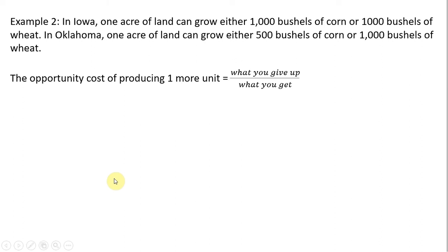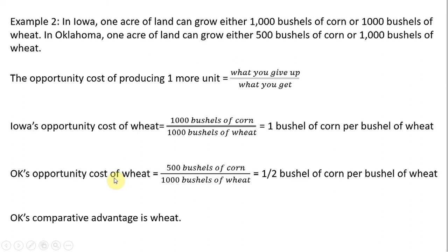Looking at it from the perspective of wheat: Iowa's opportunity cost of producing wheat is 1 bushel of corn per bushel of wheat. For Oklahoma, what you give up divided by what you get means Oklahoma is only sacrificing half a bushel of corn for each bushel of wheat produced. Therefore, Oklahoma has a comparative advantage in wheat production — it sacrifices less corn to produce a bushel of wheat than does Iowa. I hope you found this video helpful.